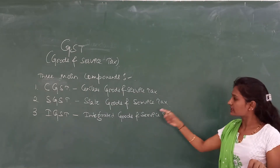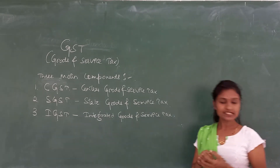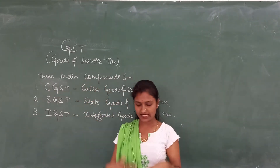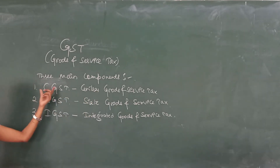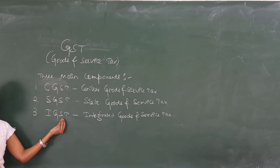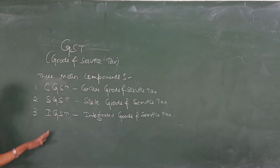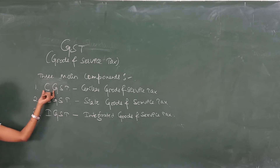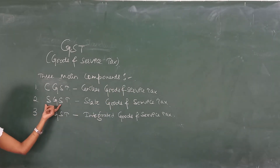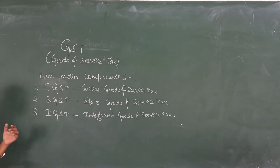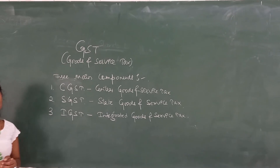So what is CGST? Whatever tax is collected from CGST directly goes to the Central Government. And with regards to SGST — State Goods and Service Tax — whatever tax is collected in SGST, that revenue will be collected by the state. Whatever tax is collected in IGST, that will be divided — half the revenue goes to the central and half goes to the state.